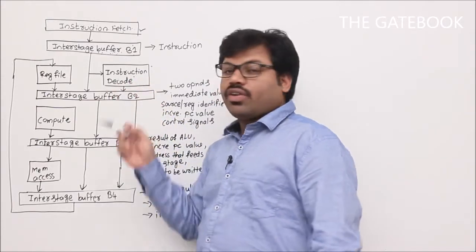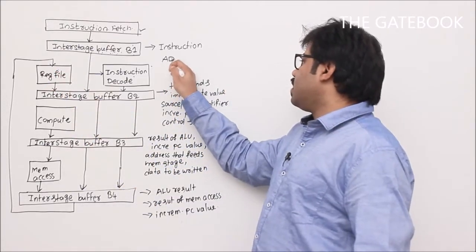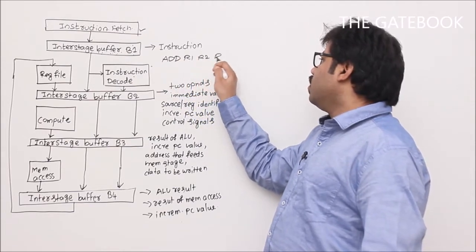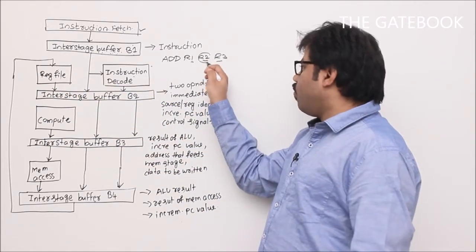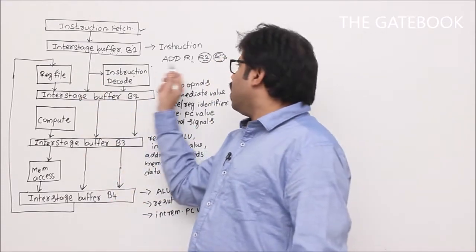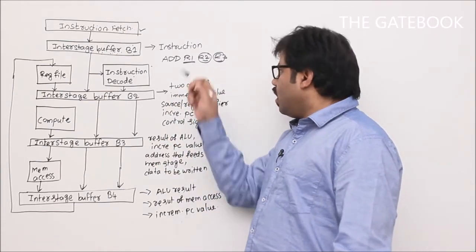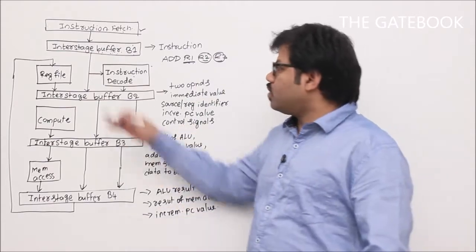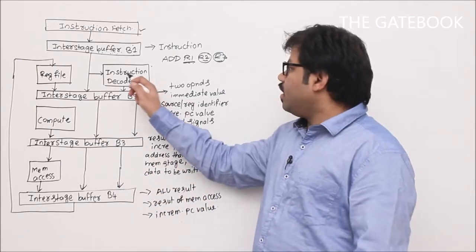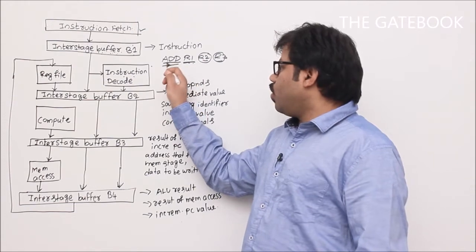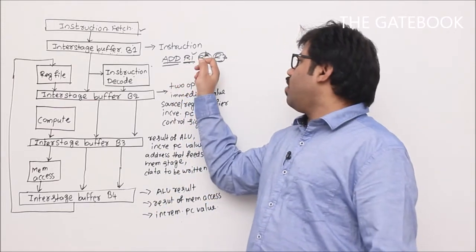At the same time, the instruction decode stage reads some register addresses from the register file. For example, if the instruction is ADD R1, R2, R3, we will be reading R2 and R3's data and R1's address from the register file — because the result should be stored in R1. In the decode stage, we are not doing addition; we are just decoding the instruction and generating control signals.